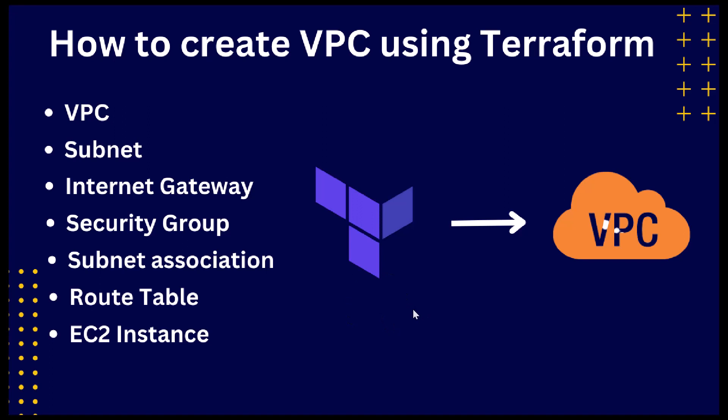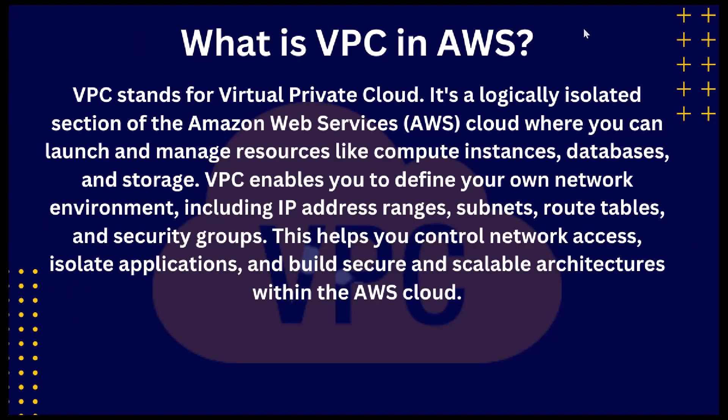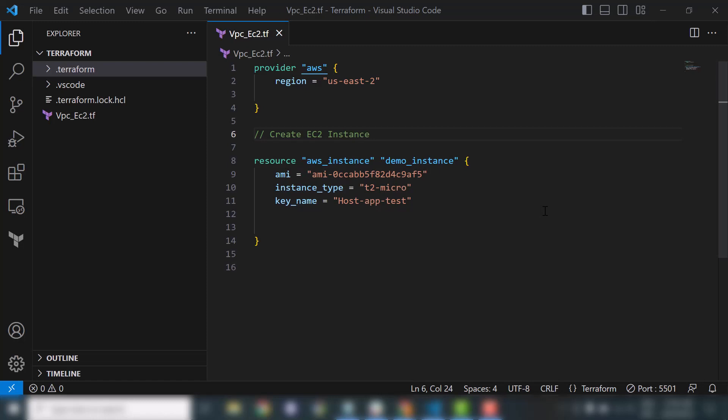In this video we will create these resources: VPC, subnet, internet gateway, security group, subnet association, route table, and EC2 instance. First let's see what a VPC is in AWS. VPC stands for Virtual Private Cloud — it's a logically isolated section of the Amazon Web Services cloud where you can launch and manage resources like compute instances, databases, and storage. VPC enables you to define your own network environment including IP address ranges, subnets, route tables, and security groups.